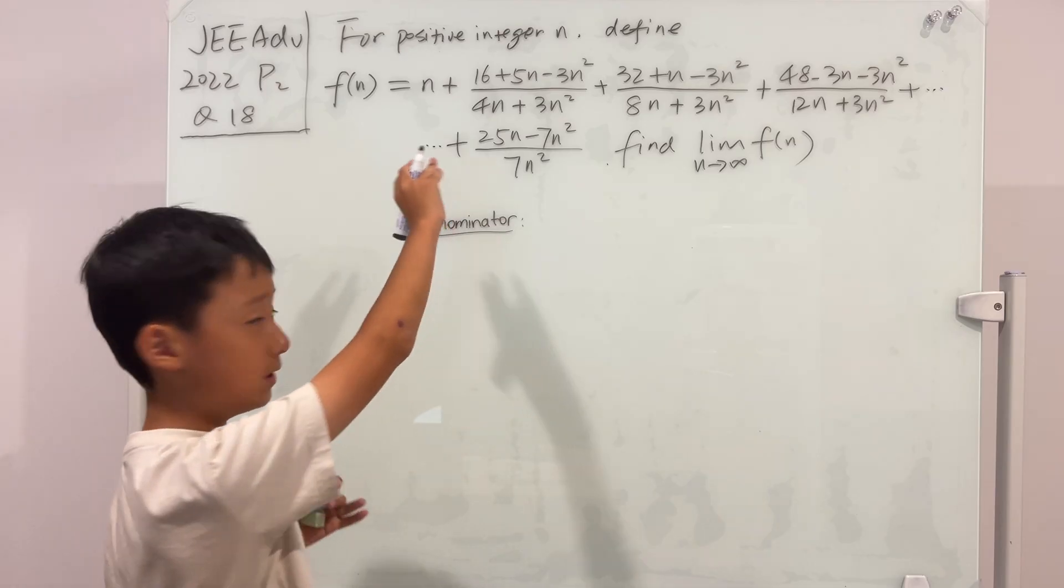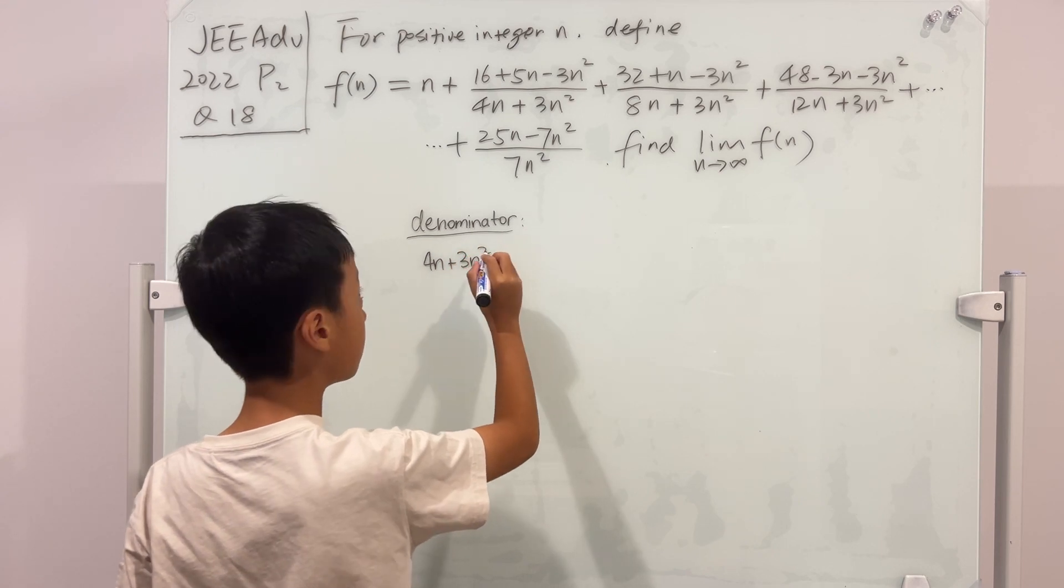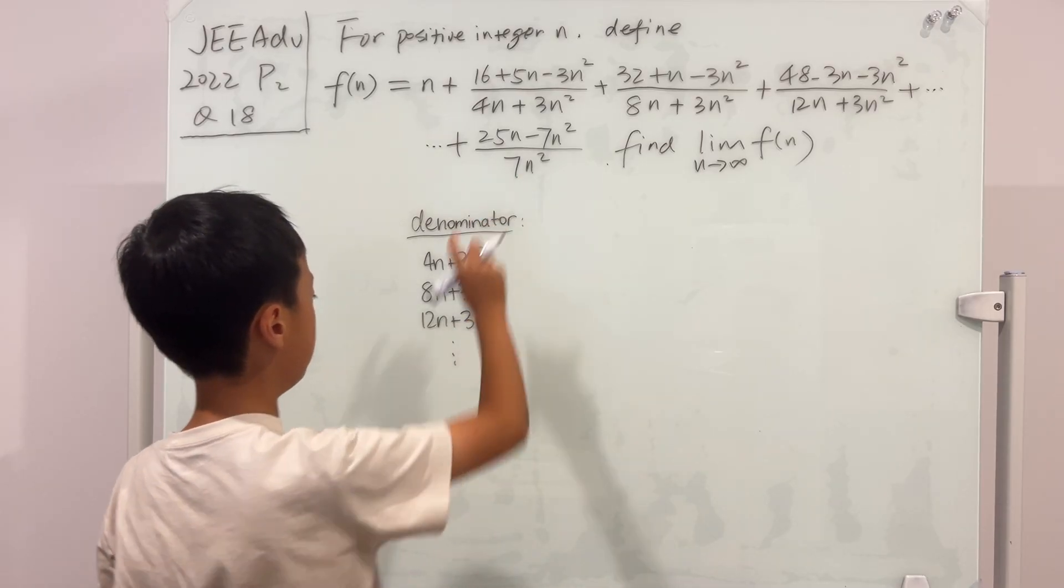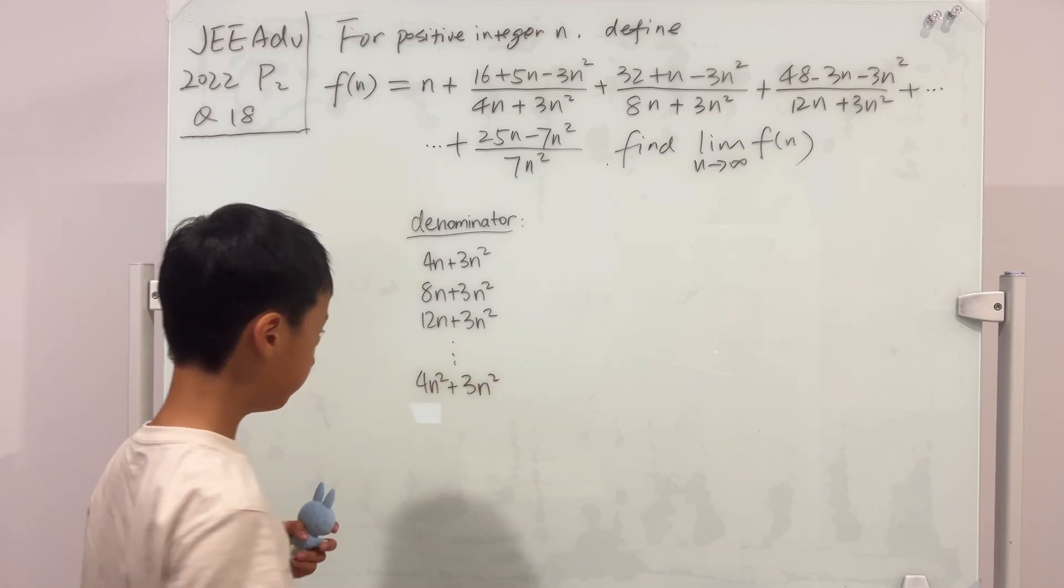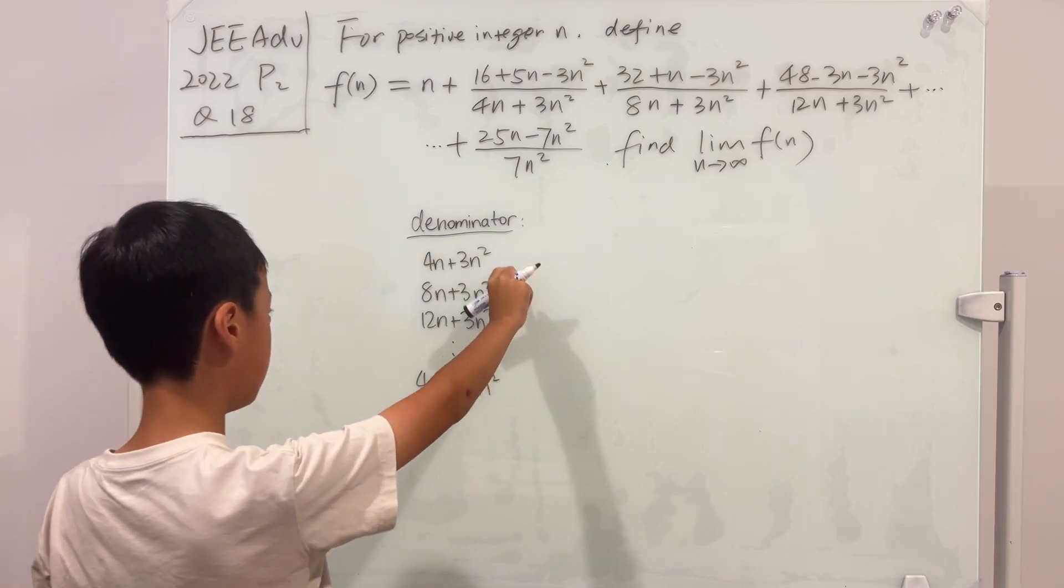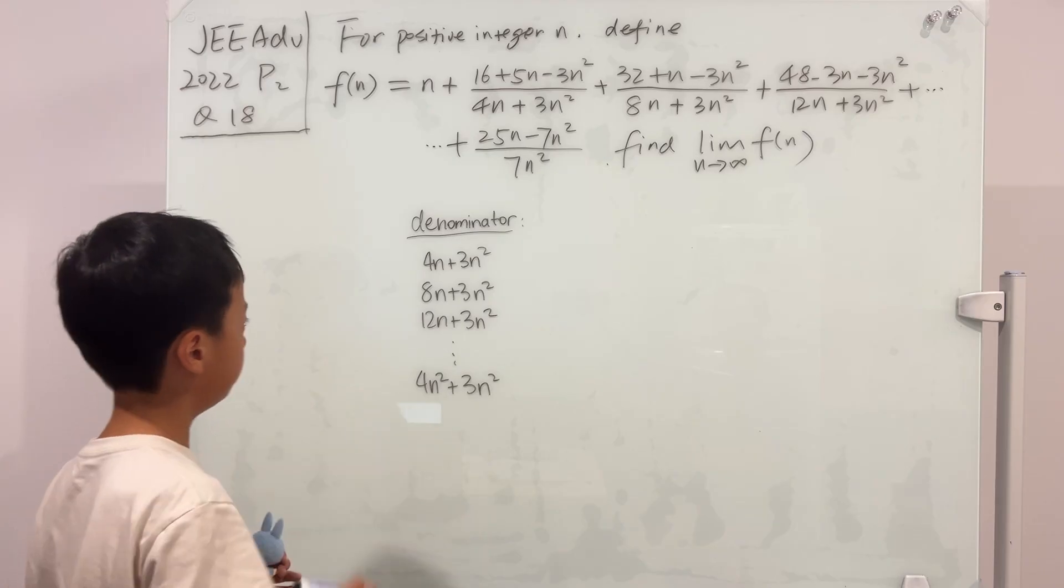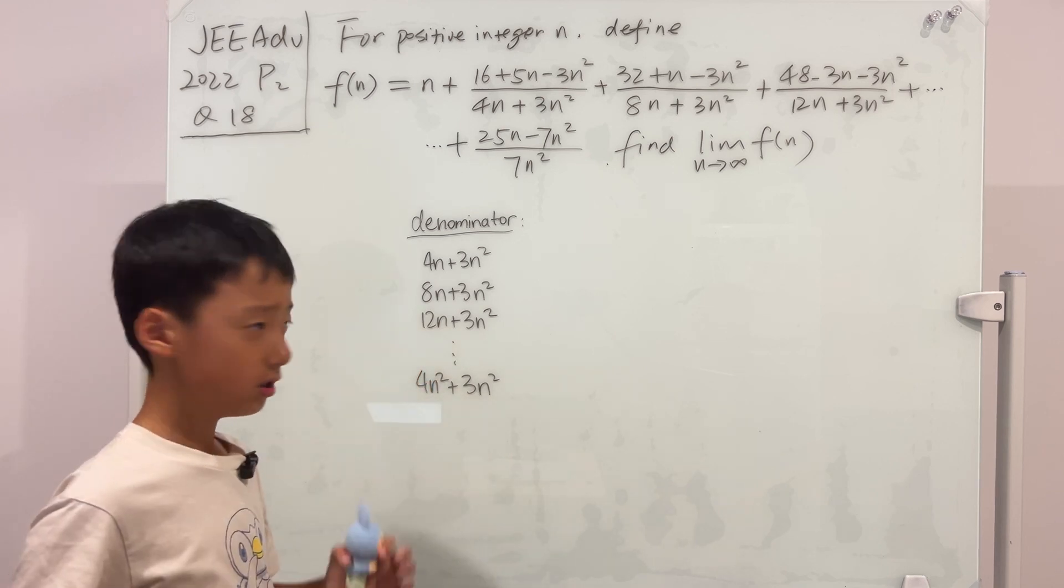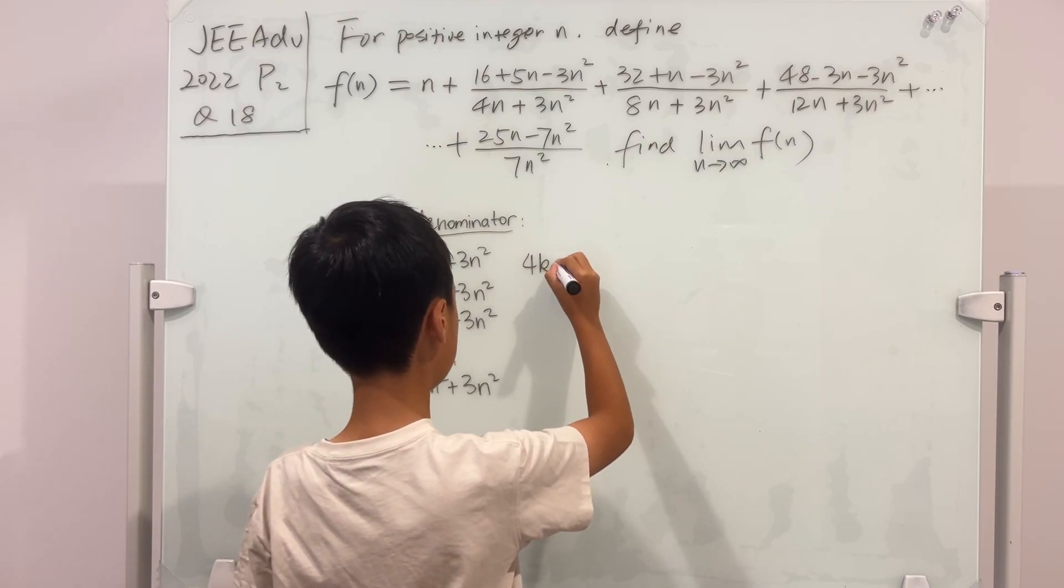For the denominator, I'm going to list out all of the terms in a column, all the way to this last term, which I'm going to write as 4n² + 3n². One thing that we're guaranteed is that the last term of this pattern is always 3n², right? Well, we see that if we exclude this last term, they're all multiples of 4. So if we ignored this, then the pattern would simply be 4kn + 3n².